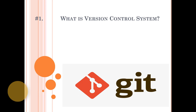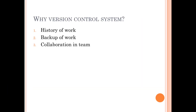Before going through the definition of VCS or version control system, let's understand why we need something like this. Suppose you're working on a document — a research task given by your boss. You've done a lot of research, created a research document, and submitted it for review to your manager. Your manager reviews your work, gives you a lot of comments, and asks you to remove some content and add new content.